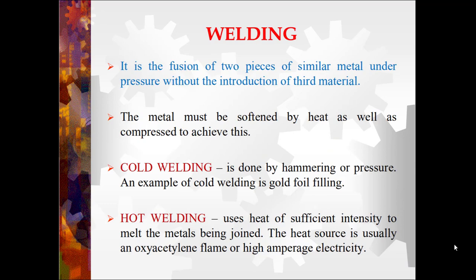The next procedure is welding. It is the fusion of two metals of similar composition under pressure without the introduction of a third material — meaning no filler material is required. The metal must be softened by heat and compressed to achieve this. There are two types: cold welding, done by hammering or pressure (an example is gold foil filling, where two metal pieces are placed under pressure and fused); and hot welding, which uses heat of sufficient intensity to melt the metals being joined, with the heat source usually being an oxyacetylene flame or high-amperage electricity.